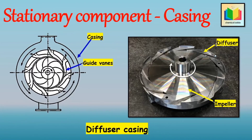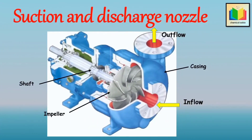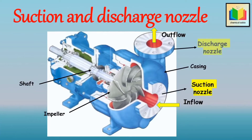The next stationary part is the suction and discharge nozzle. The suction and discharge nozzles are part of the casing itself. Liquid enters through the suction nozzle and leaves through the discharge nozzle.